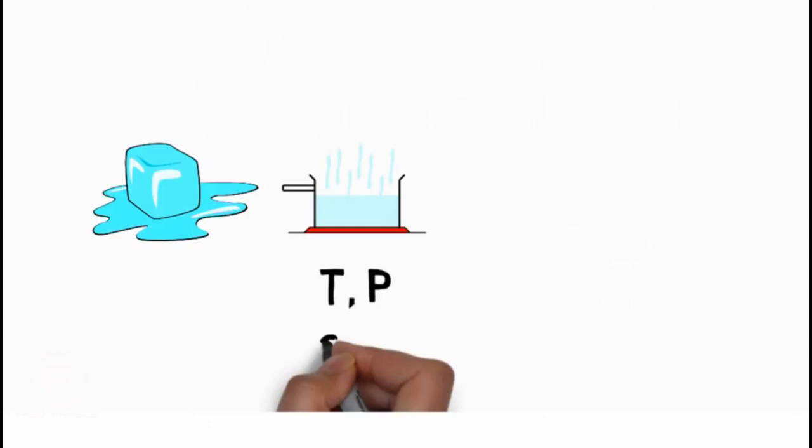During phase transitions like melting, vaporization, and sublimation, the temperature and pressure remain constant while the entropy and volume change.